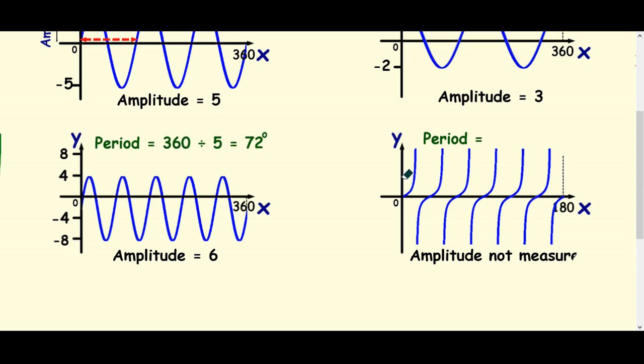Okay, right. This one is a tan graph, but you can't get the amplitude. So I've just got that. Amplitude is not measured because it goes off to infinity. So some people say it's undefined. That would be another way to define it. It's undefined, if you like.